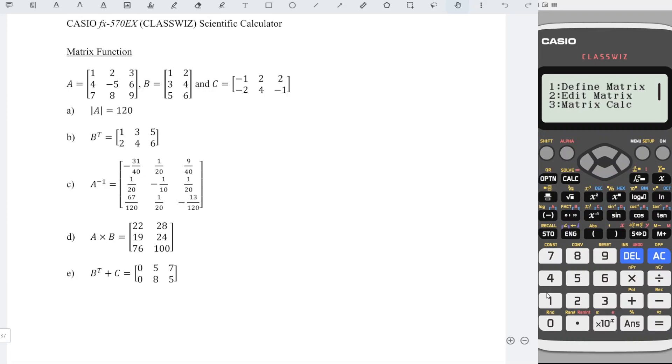Option, define matrix C. Number of rows: 2. Columns: 3.